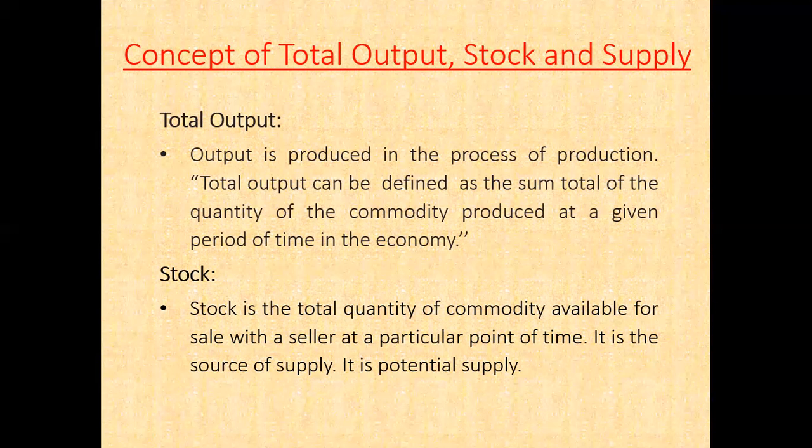Total output refers to the total quantity of a commodity that a producer produces with the help of factors of production — land, labour, capital and entrepreneur — using a particular technology during a given period of time. Production leads to consumption, and in the process, inputs are converted into final goods. Stock is the total quantity of a commodity available for sale with a seller at a particular point of time. It is the source of supply; it is the potential supply.